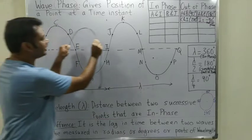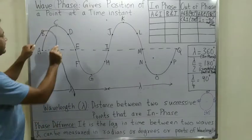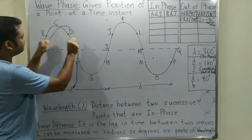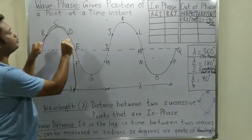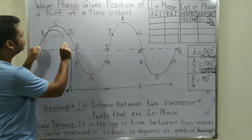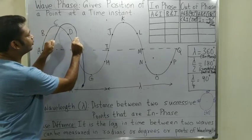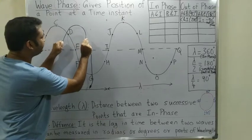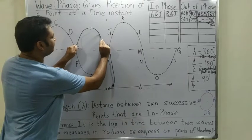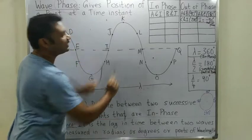Now this wave is going to move forward. When this wave moves forward, a little later the crest will be above point D, then above point E, then above point F, then G, H, I point.